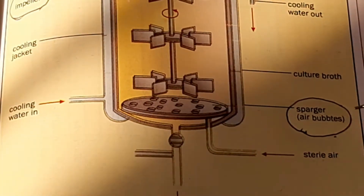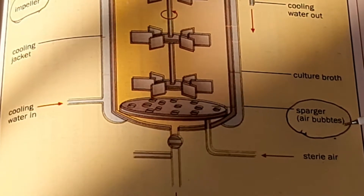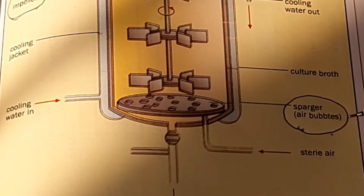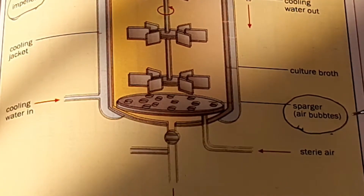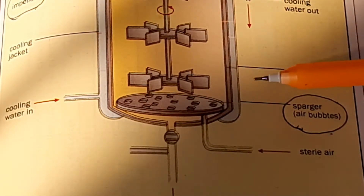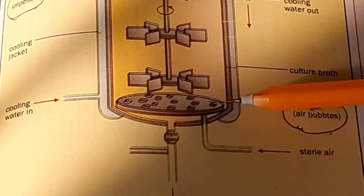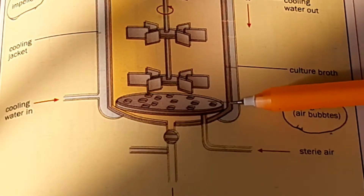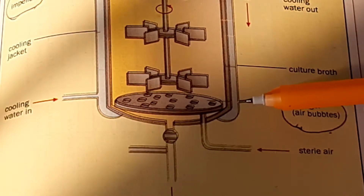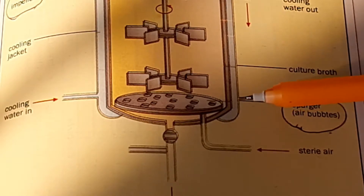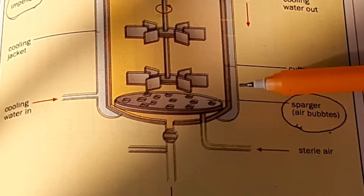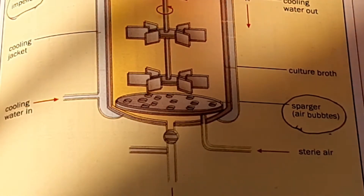This is the sparger — an aeration device. It is a metal ring with tiny holes through which air is passed into the fermenter under high pressure. Air enters the fermenter as tiny air bubbles, and oxygen diffuses into the nutrient broth.